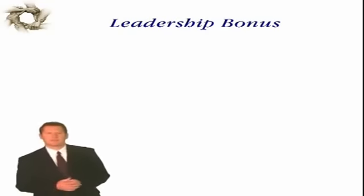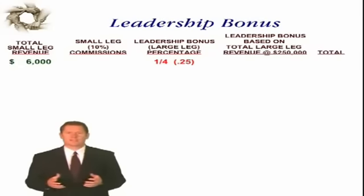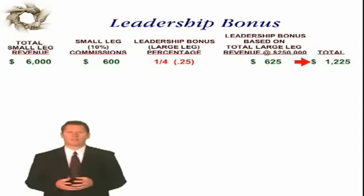The Leadership Bonus is set up to give you even more incentive to build your small leg. Here's how it shakes out for you personally. Once your small leg hits the first milestone of $6,000 per month, you begin to earn a one-quarter percent commission on the volume of your large leg. So let's say you hit your $6,000 mark on your small leg, but your strong leg is doing a steady $250,000 each month. With this, you would make 10% of your small leg or $600, while on your large leg you would earn one-quarter of 1% or $625, for a total of $1,225.